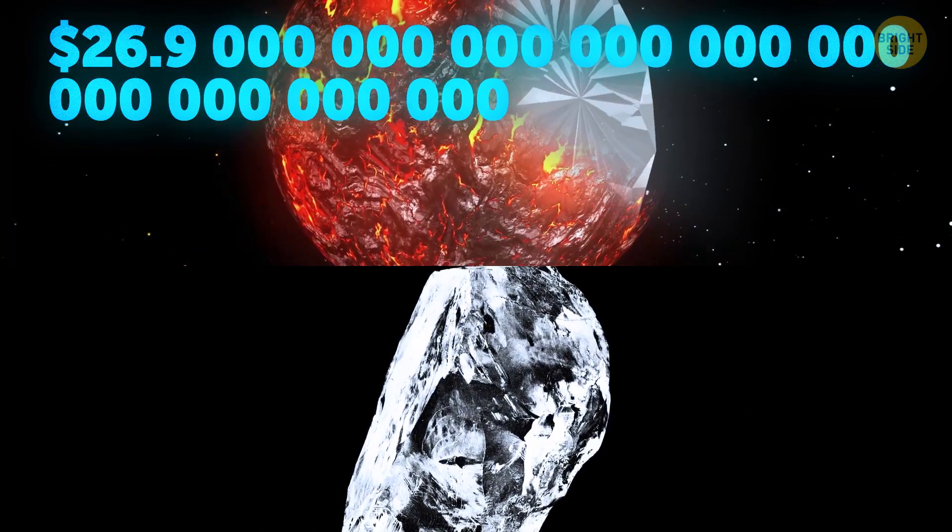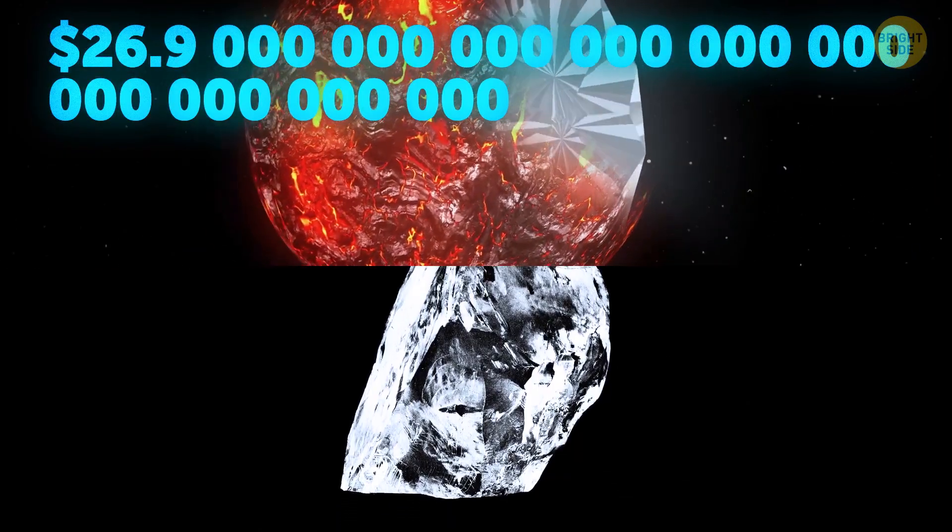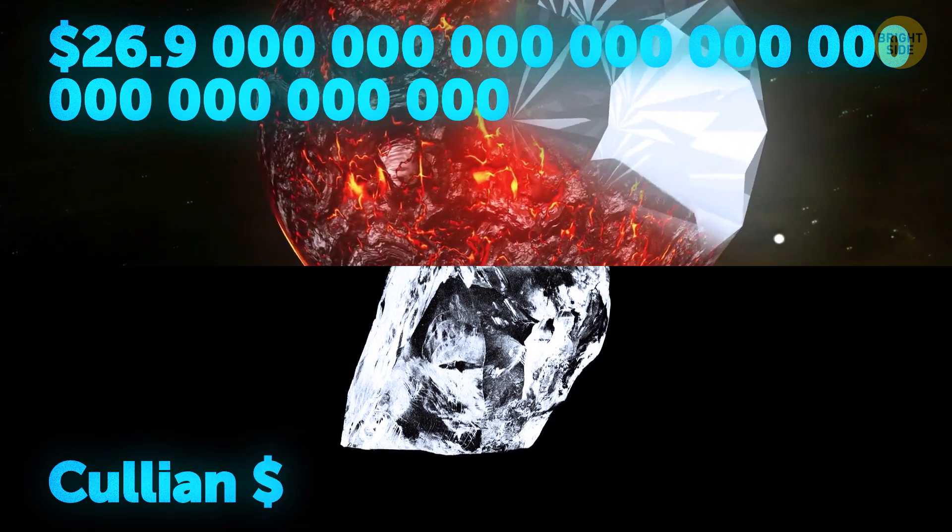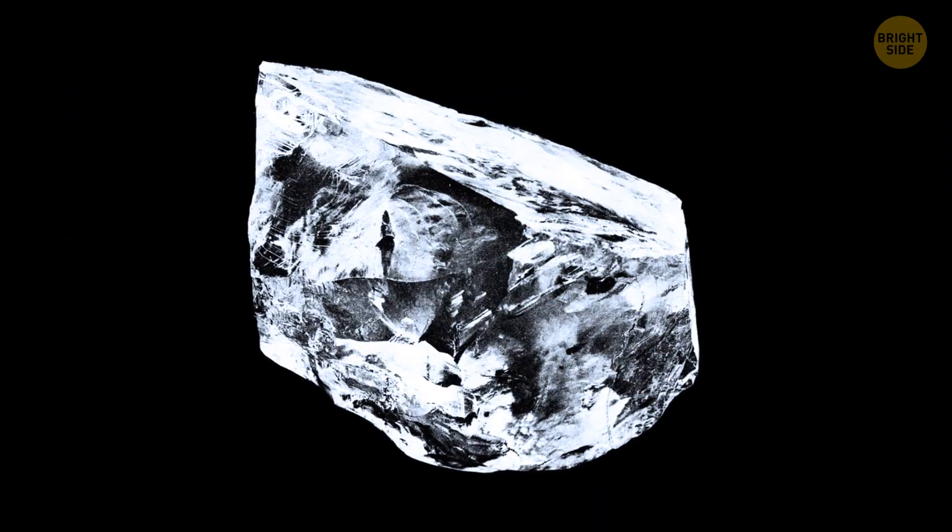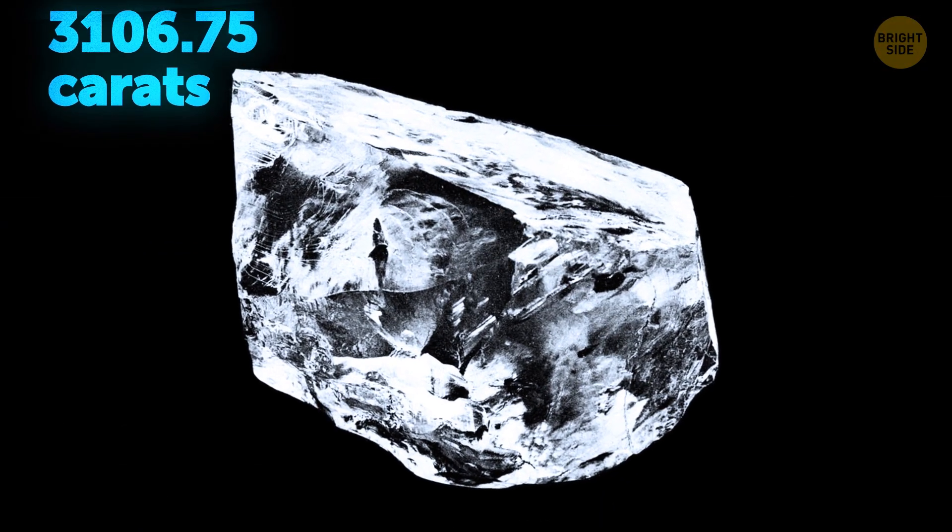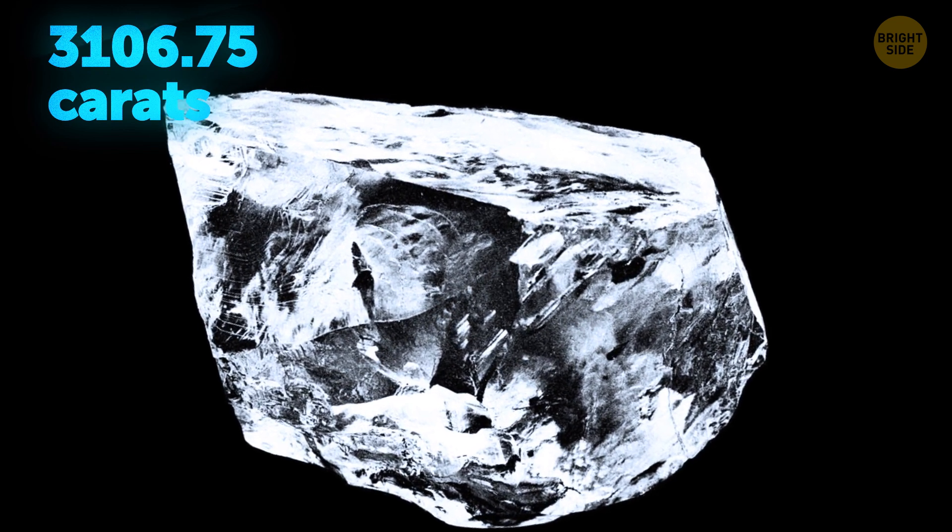Now, for comparison, one of the most expensive diamonds on Earth ever is the Cullinan. It costs a whopping $2 billion. And its original weight was a mind-boggling 3106.75 carat.